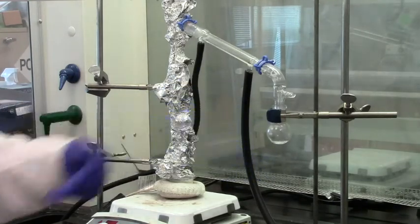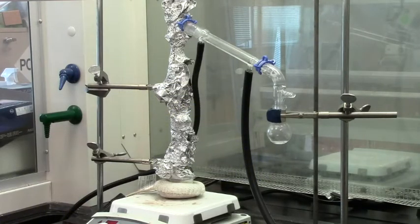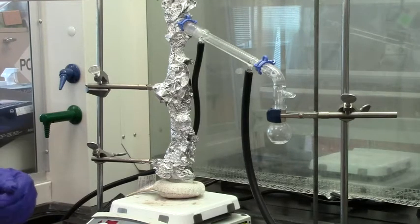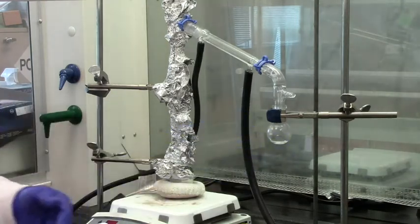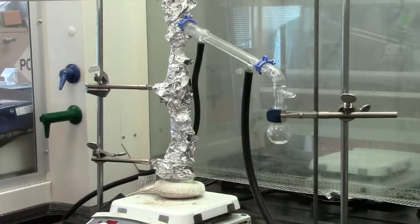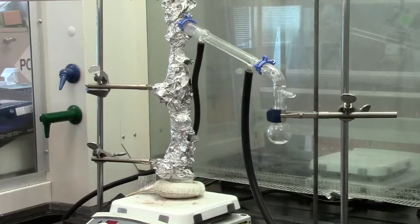Then we'll look at the second fraction. We'll continue collecting it until the temperature gets to about 100. Then we'll measure how much of that we received and then we'll switch flask again and do a third fraction and the third fraction should be mostly toluene.